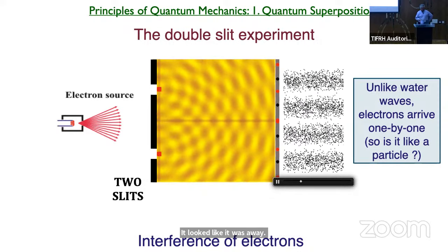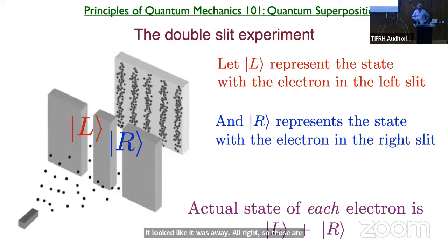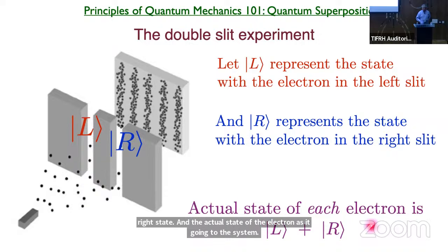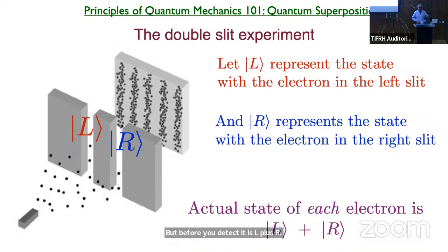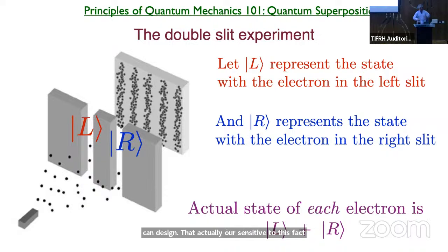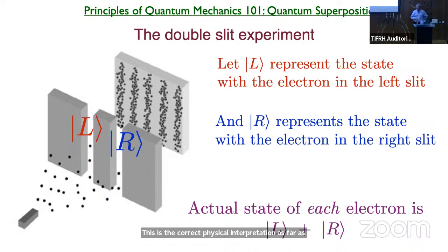There is a so-called wave-particle duality. Each individual electron comes in like a particle, but when you average over many of them, it looks like a wave. The more precise way of saying this is the principle of superposition. We think of the electron as two possible states: the left state L and the right state R. The actual state of the electron, as it goes through the system before you detect it, is L plus R. There are many sophisticated experiments you can design that are sensitive to this fact, and this is the correct physical interpretation as far as anyone can tell.